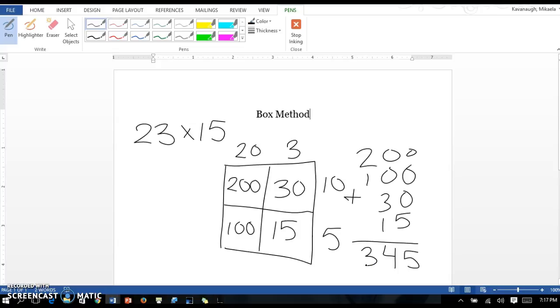So we get the same number as if we would type 23 times 15 in the calculator or if we did the traditional way and lined it up horizontally, but this is going to provide students a new strategy for solving and we're really focusing on them understanding place value and why the 2 is a 20 and the 1 is a 10 in the number 15.